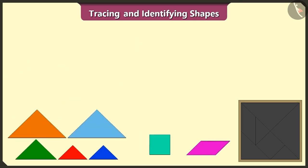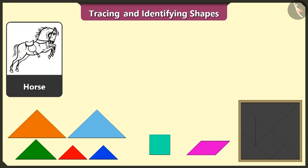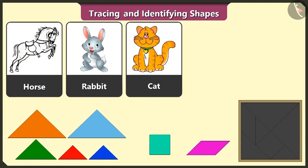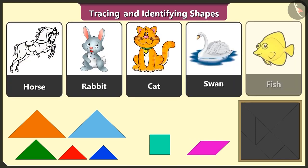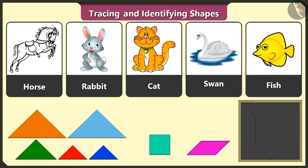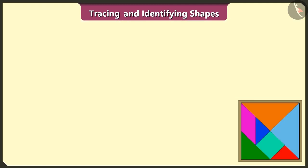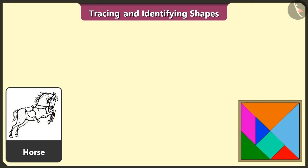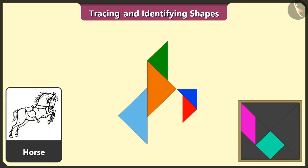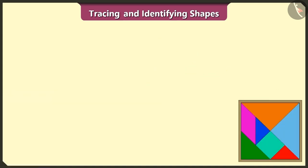Today we will create figures of a horse, rabbit, cat, swan, and fish using these shapes. Look, this is a horse. Now we will make a horse using five triangles, one square, and one quadrilateral. See, the horse is ready!